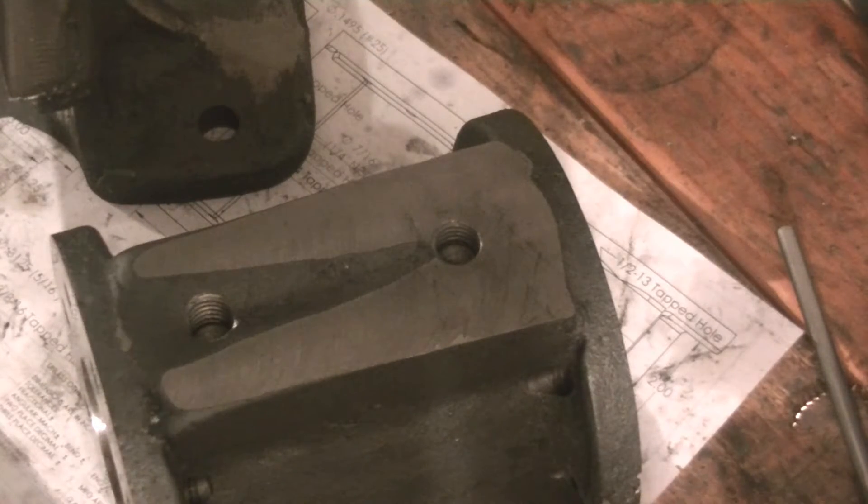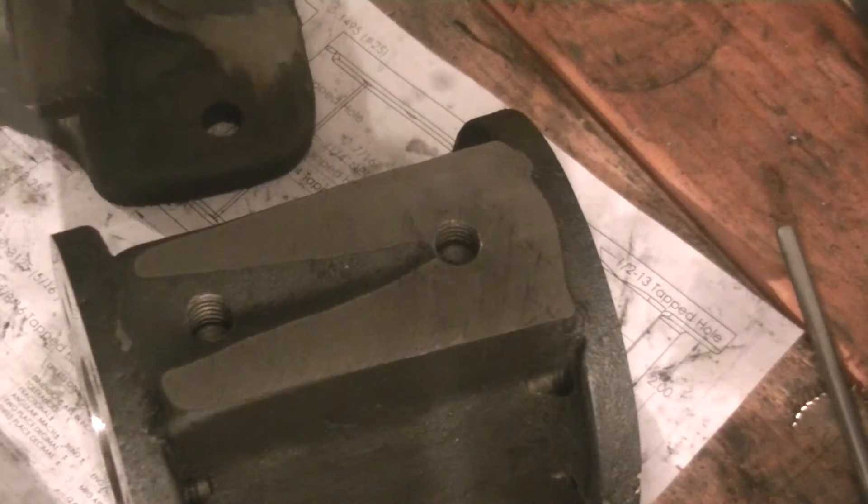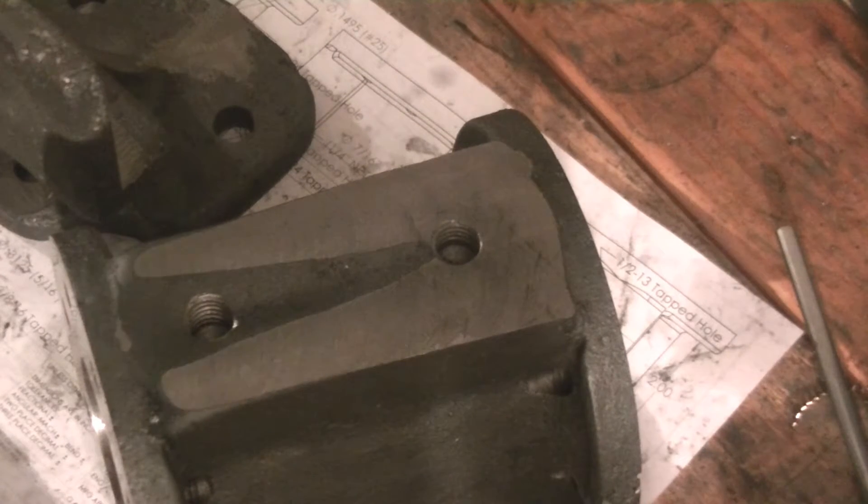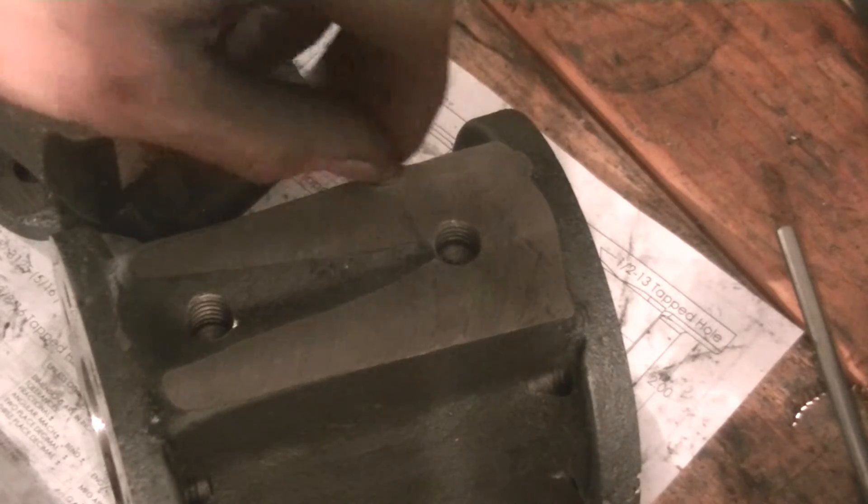Right now I'm just going to drill the half inch holes. And then later on down the line, when I'm putting everything together, if this is giving me a problem, I'll just enlarge the holes on this piece. So that's what I'm going to do. I'm going to get as straight as I can.